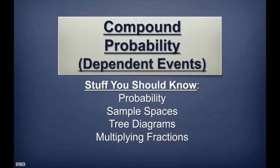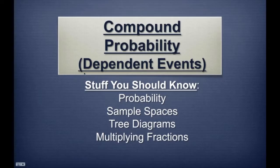Welcome back to Mr. Ace Math. This lesson is on compound probability, except the only difference between this lesson and my other lesson is that the other lesson was on independent events, where one event did not affect the other. This is on dependent events — in other words, the first event will have some change on the second event. Some stuff you should know are the basics of probability, what sample spaces are, how to make and read tree diagrams, and how to multiply fractions. Make sure you know these, and let's get started.